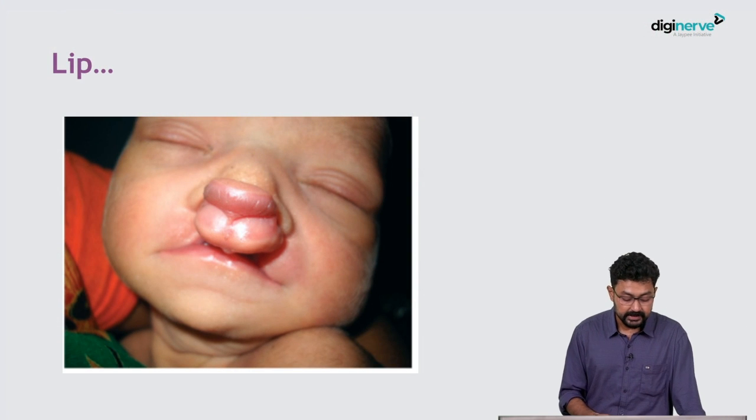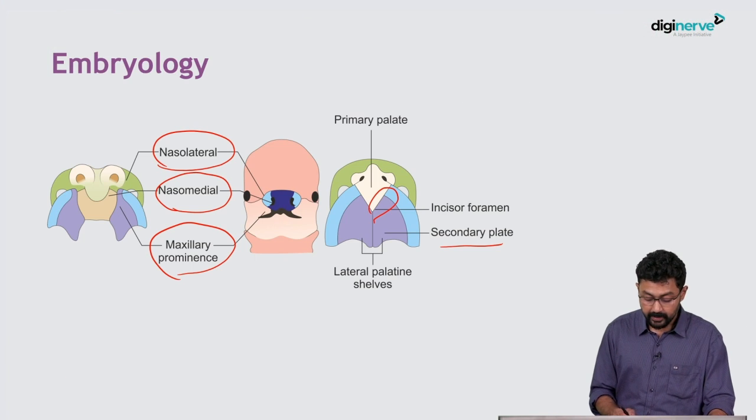The problem with these kids is if we go back, you can see this area, the incisive foramen. This is where the lip develops. Once there is a cleft on both sides, this thing also tends to come in front.